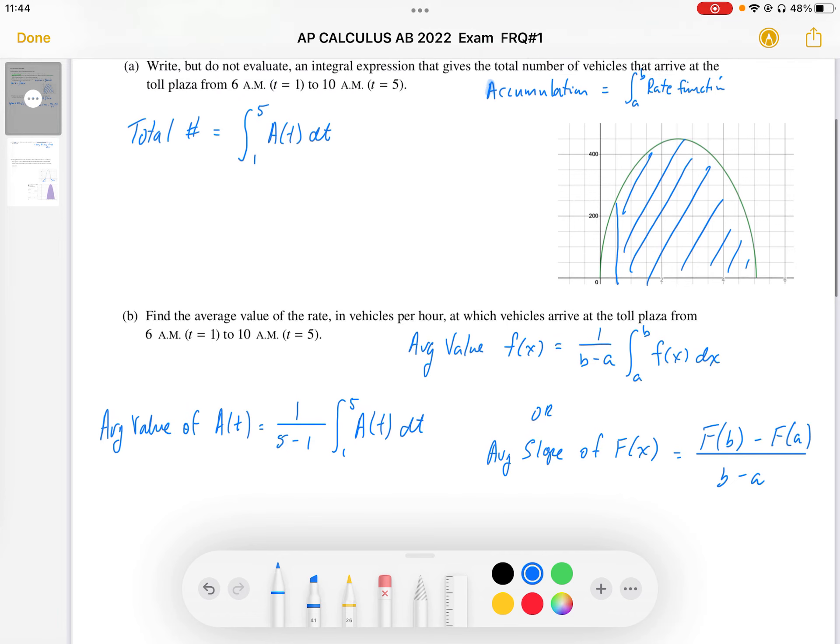This is the area we were looking at before. We're going to put this into a graphing calculator and integrate to find that area. That area works out to be 1,502.148.